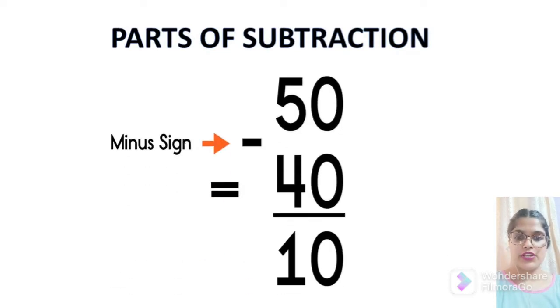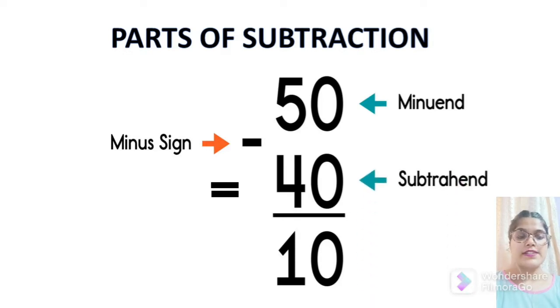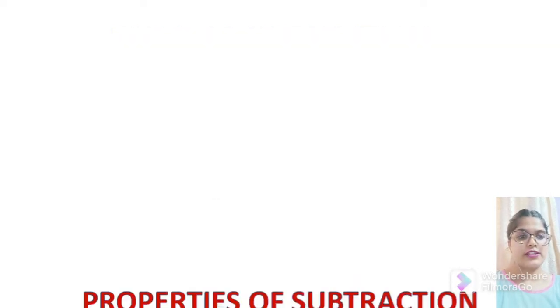Parts of subtraction. The uppermost part which is written as 50 here is called minuend and the number below that which is written as 40 is called subtrahend and the answer which is written as 10 here is called difference.